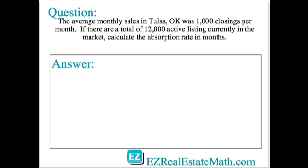So let's take a look at this question. The average monthly sales in Tulsa, Oklahoma was 1,000 closings per month. If there are a total of 12,000 active listings currently in the market, calculate the absorption rate in months.